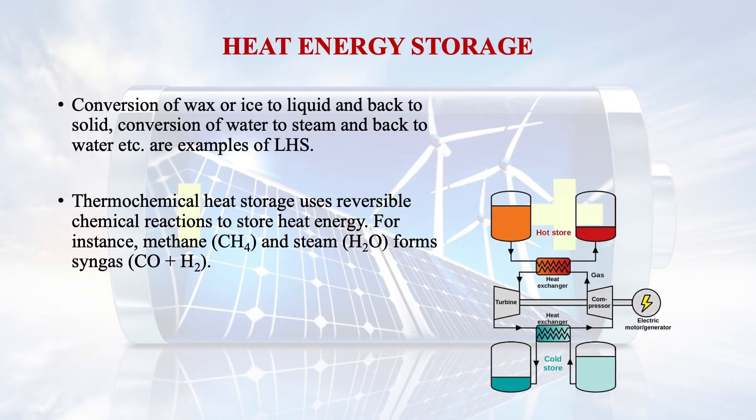Another heat storage system is thermochemical heat storage. This uses reversible chemical reactions to store heat energy. For instance, methane and steam — water vapor — form a synthesis gas. This synthesis gas, in the presence of a catalyst, again forms water vapor and methane by releasing heat. Other reactant-product pairs used in this storage include ammonia and nitrogen, and calcium oxide and water to form calcium hydroxide. These are the materials used in thermochemical heat storage.